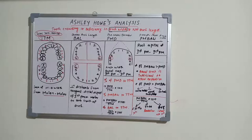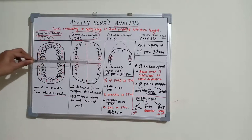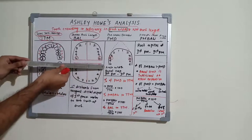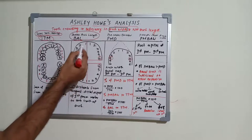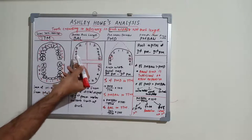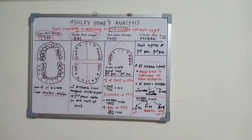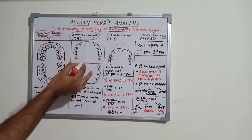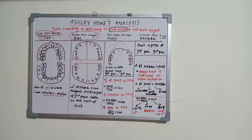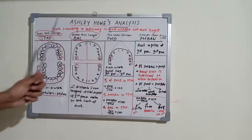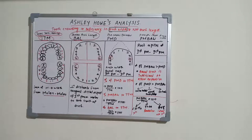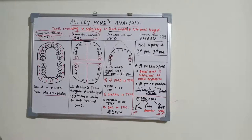The second parameter is basal arch length (BAL). It is the perpendicular distance from a tangent drawn from the distal aspect of the first permanent molar to the anterior limit of the arch. So, from the distal side of the first molar, we draw a tangent and then a perpendicular to the front of the arch — that measurement is the basal arch length.